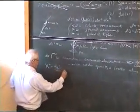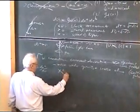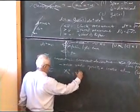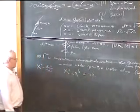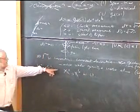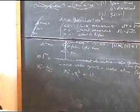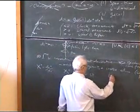If the tangent vector is dxa by dv, then it satisfies the equation xa semicolon bxb, where that's the covariant derivative, is equal to 0. And that's a way of saying that the curve is parallel along itself. And in particular, light rays